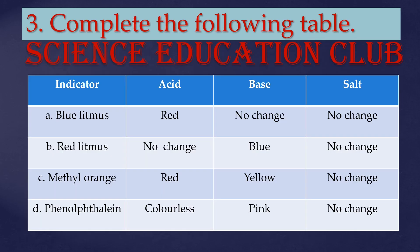Complete the following table. There are four indicators. Blue litmus paper becomes red in acid, no change in base, no change in salt. Red litmus paper shows no change in acid, turns blue in base, no change in salt. Methyl orange becomes red in acid, yellow in base, no change in salt. Phenolphthalein becomes colorless in acid, pink in base, no change in salt.